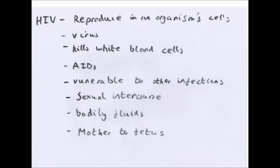What HIV does is kill the white blood cells. You go from HIV — human immunodeficiency virus — to AIDS — Acquired Immunodeficiency Syndrome. This means your immune system stops working. You become vulnerable to other infections, and that's what kills you. It's not the HIV or AIDS itself, but other infections such as pneumonia, which your body would normally fight off easily with a good immune system.